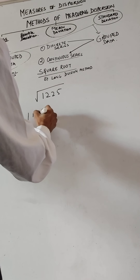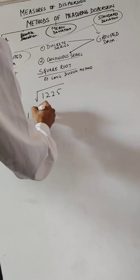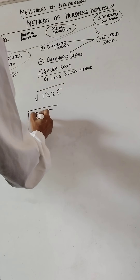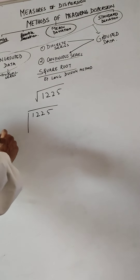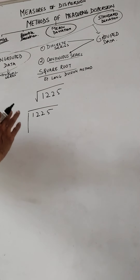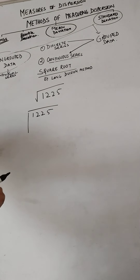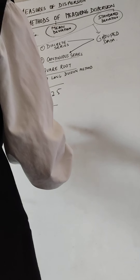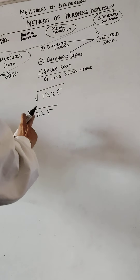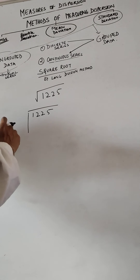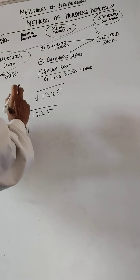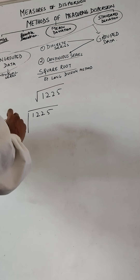I'll set it up. We don't have the divisor yet — we have to work it out. Since it's a square root, we need to find what the divisor will be. Being a square root, make sure that the divisor and the quotient are the same.